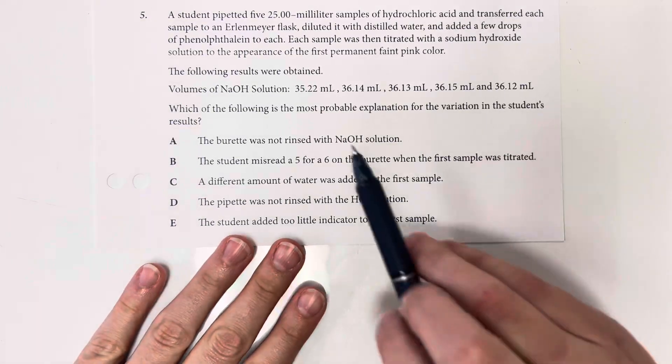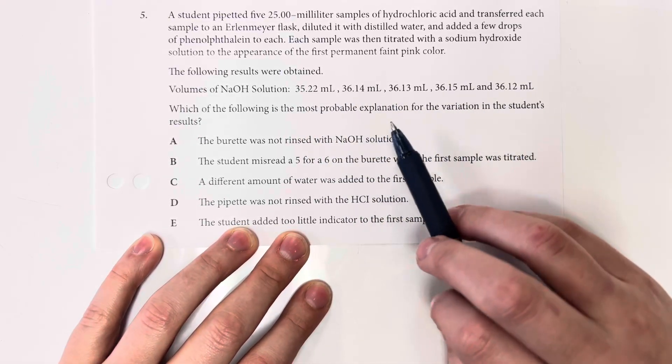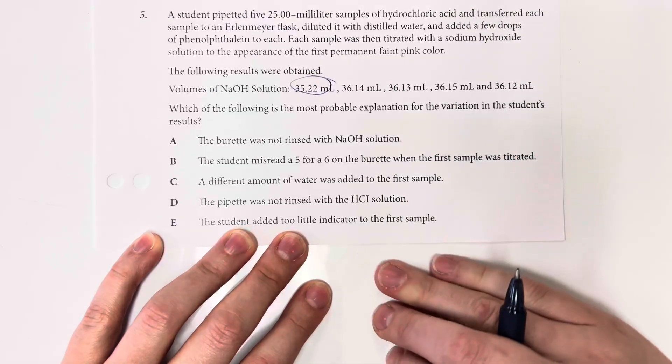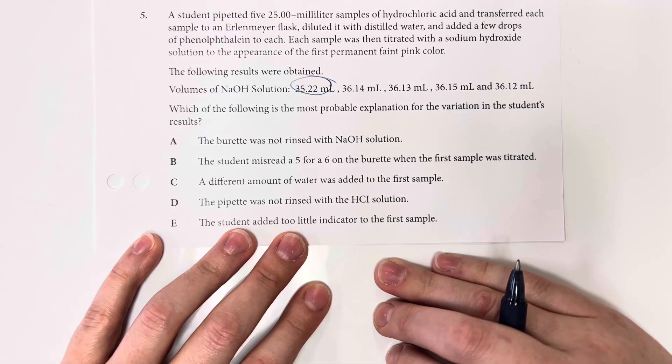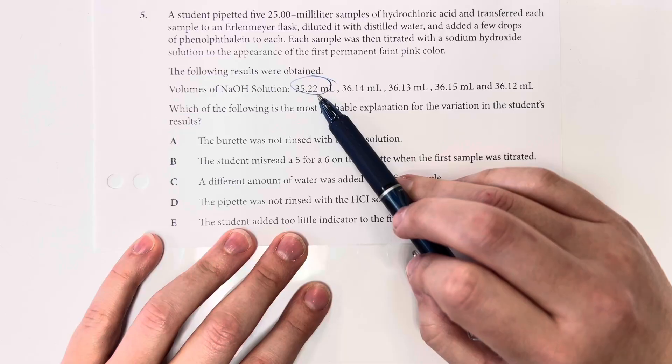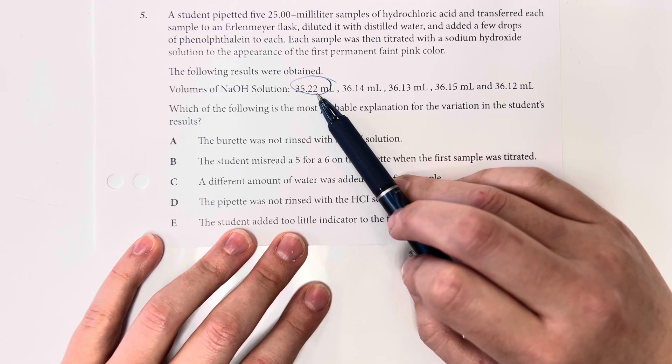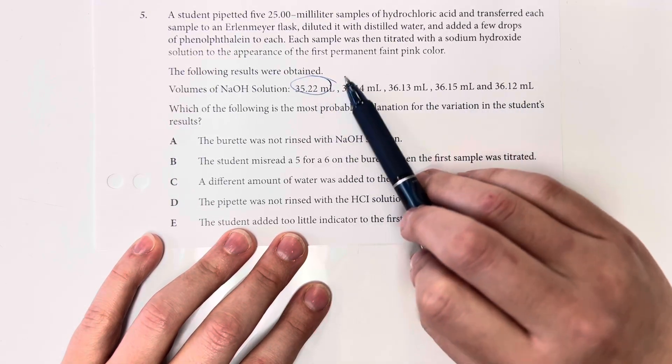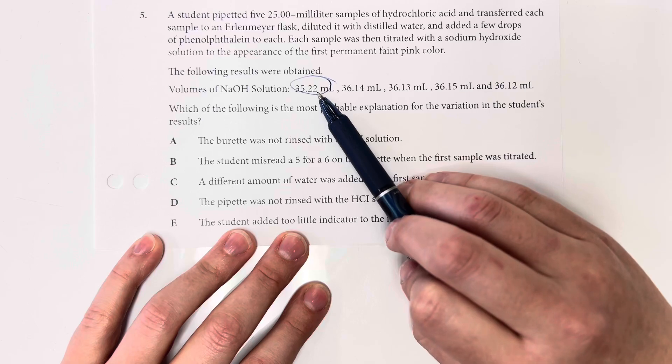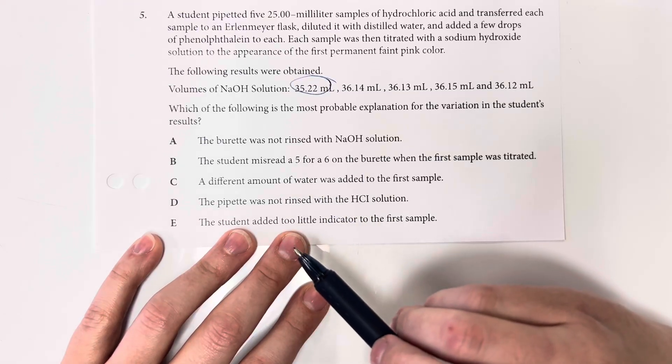So I should have my volumes of sodium hydroxide be the same and pretty close to the same throughout. I have an outlier here, and so that's what we're looking for a possible problem. So if I needed less sodium hydroxide than the rest of them, it means that I had less hydrochloric acid than I should have in that first trial. So I'm going to look for an explanation for something about why I could potentially have less hydrochloric acid in that first trial when we were pipetting with hydrochloric acid.